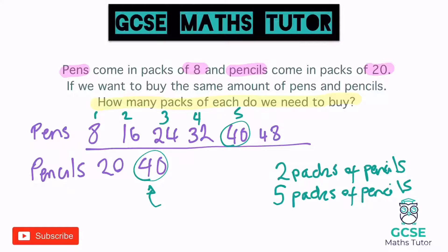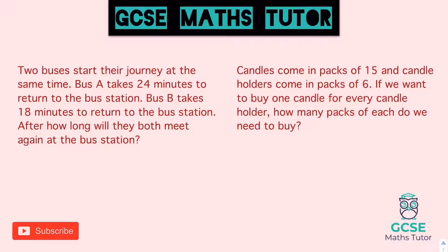Now to be fair, the question said how many packs of each do we need to buy if we want the same amount. You could keep going — if we keep going we'd get to 80, which is four packs of pencils and 10 packs of pens. But we're going to find the smallest one. Here are two questions for you to have a go at — pause the video and I'll go over the answers in a sec.